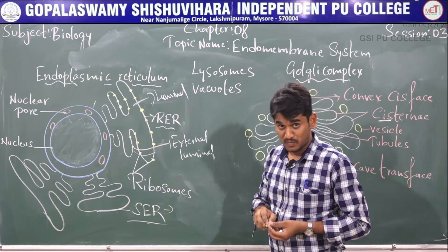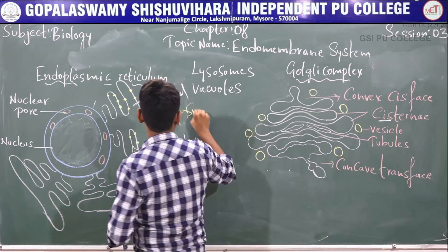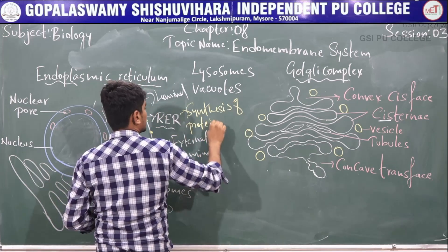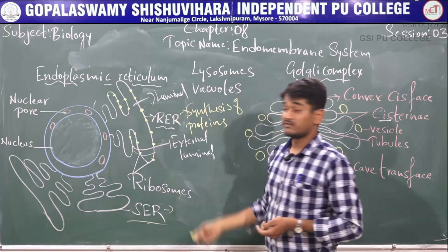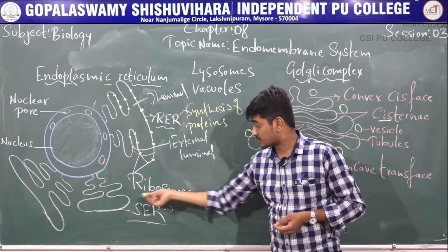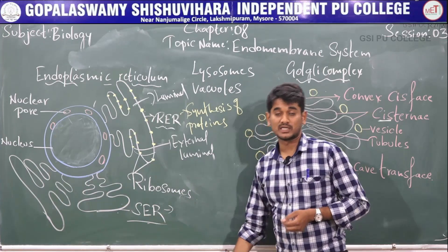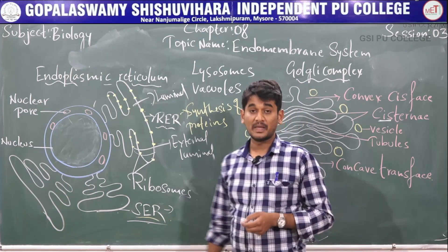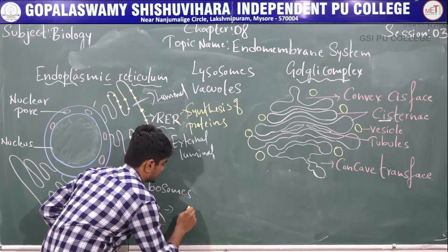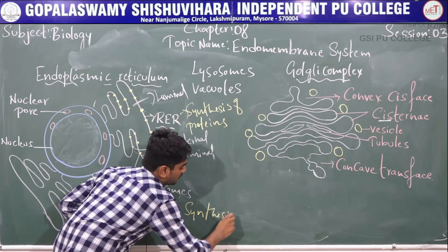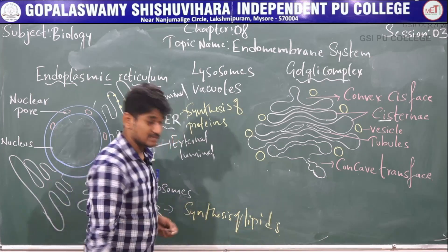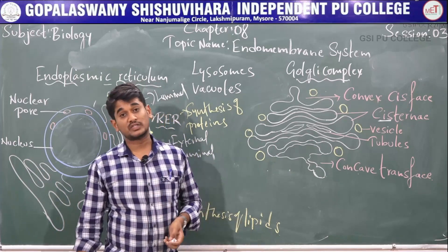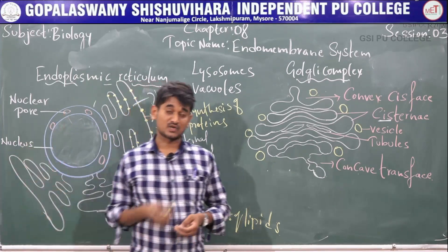The function of rough endoplasmic reticulum is synthesis of proteins and secretion. If the ribosomes are not attached to the surface of the endoplasmic reticulum, it becomes smooth — that is considered as smooth endoplasmic reticulum. The function of smooth endoplasmic reticulum is synthesis of lipids, and in animal cells, steroidal hormone synthesis takes place in the smooth endoplasmic reticulum.